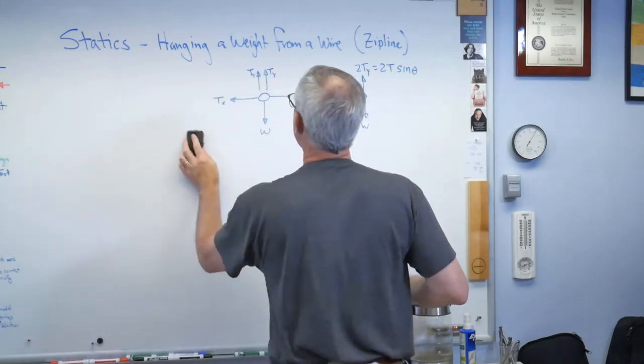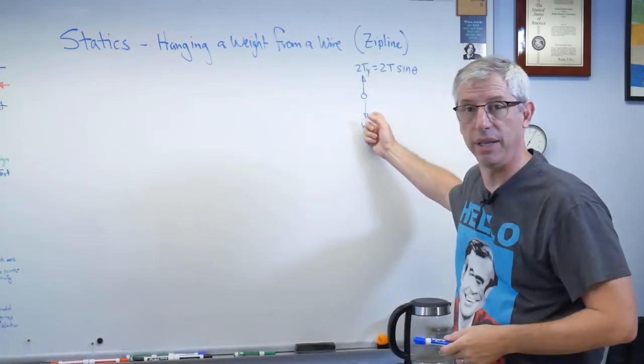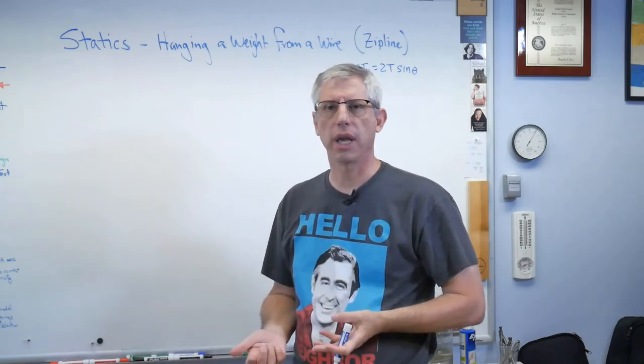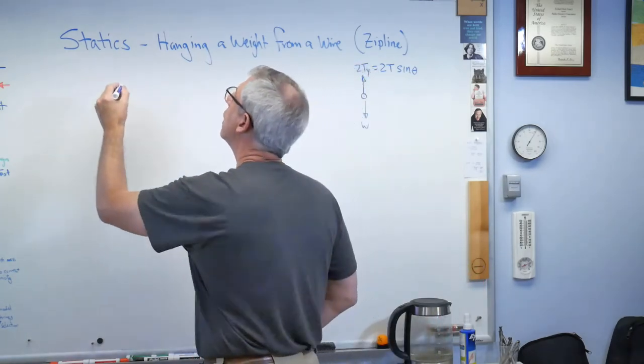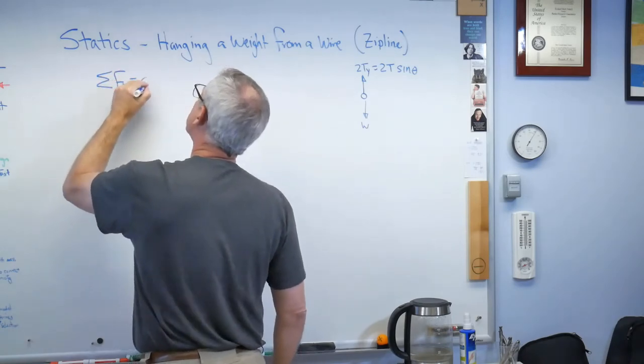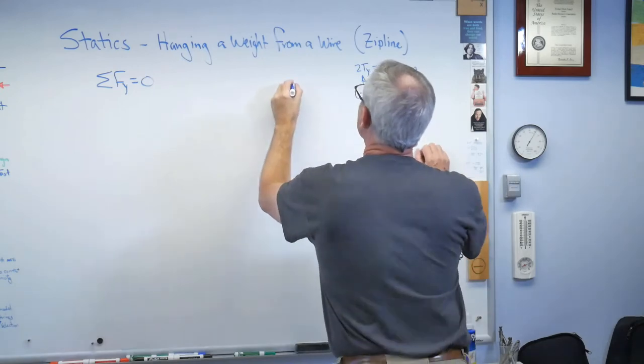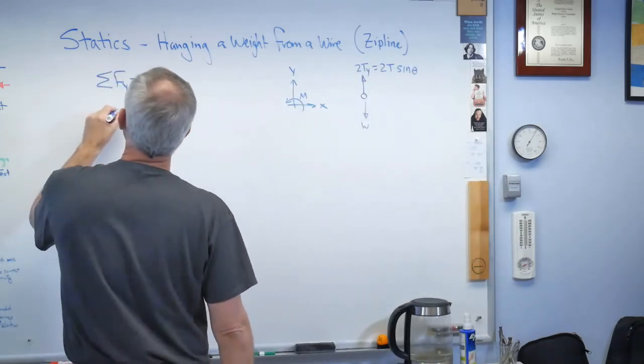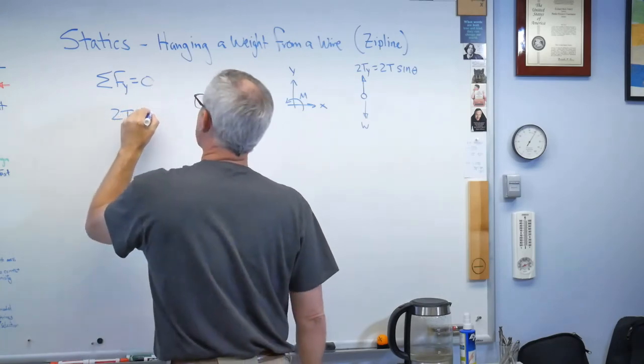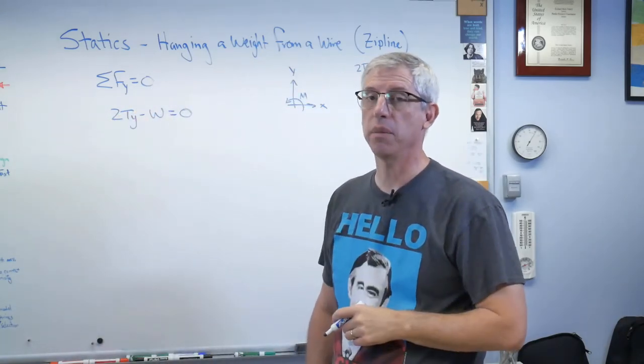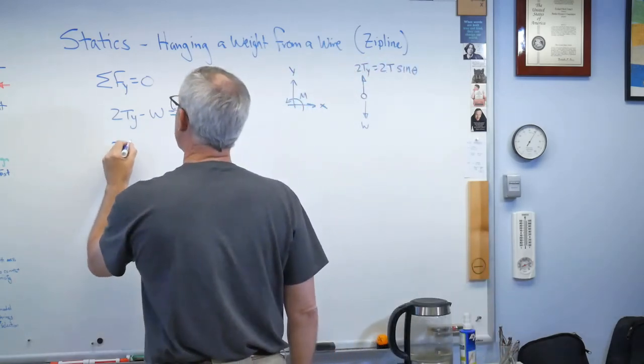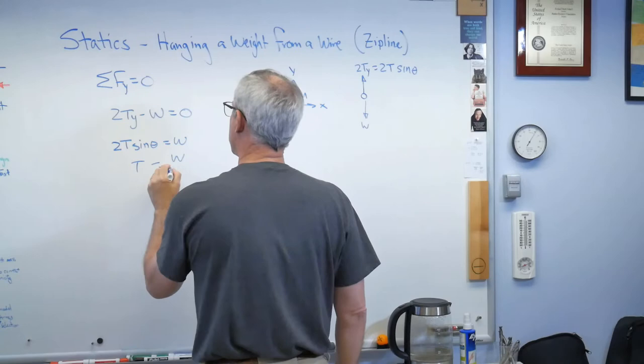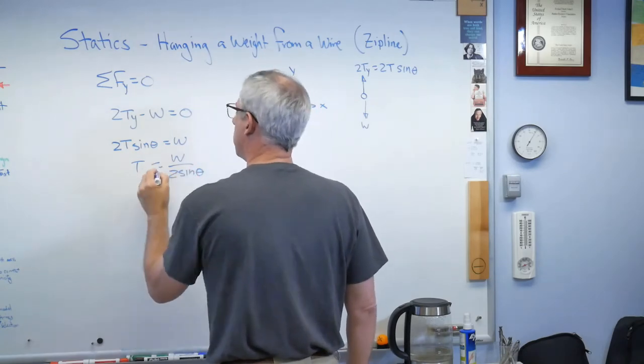So I've got my working diagram, I've got my really simplified free body diagram. The next step is to write an equation of static equilibrium. We already know the horizontal forces cancel out. They have to because the problem is symmetric. So all I've got to do now is sum the forces in the y direction and set them equal to 0. So it looks to me like 2ty minus w equals 0. That means 2t sine theta equals w. And if I'm trying to find t, that means t equals w over 2 sine theta. That's easy.